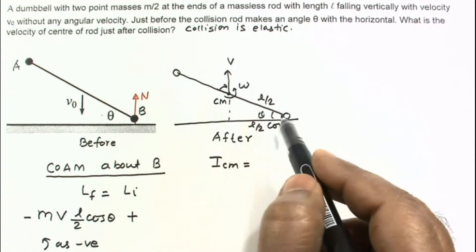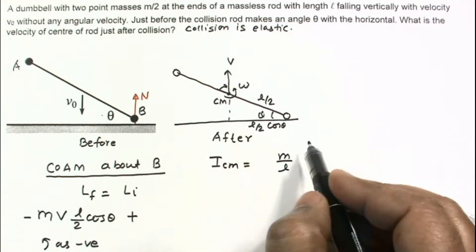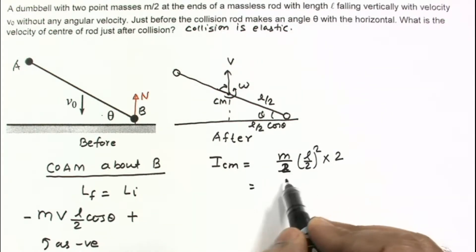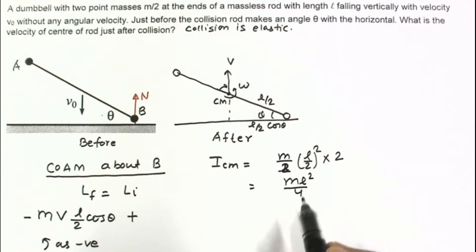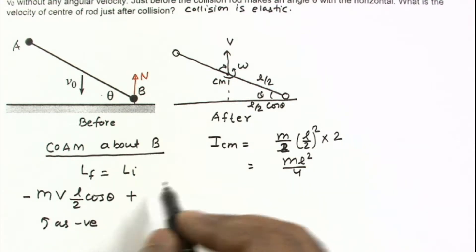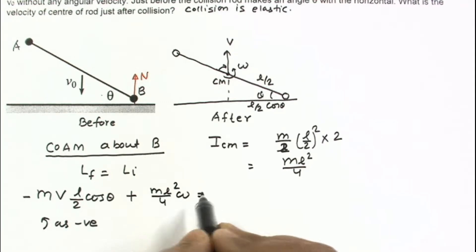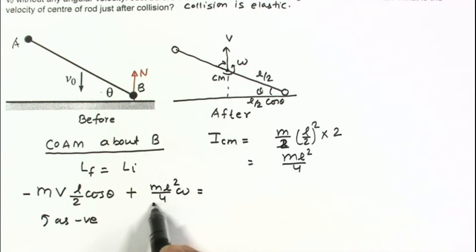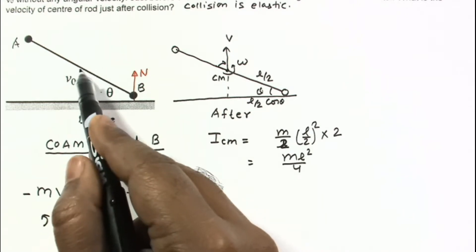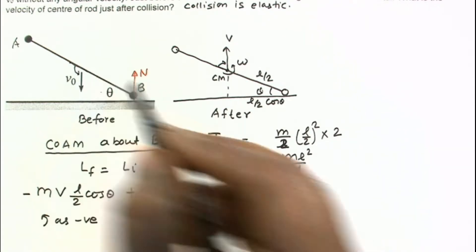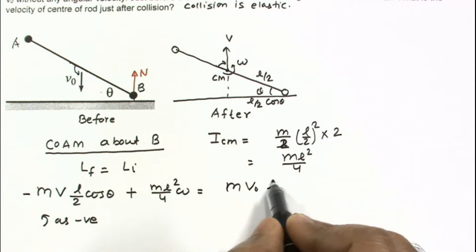I_cm is calculated about the axis through the center of mass: each mass is m/2 at distance l/2, giving I_cm = 2 × (m/2)·(l/2)² = ml²/4. The I_cm·ω term is anticlockwise, so it is positive: (ml²/4)·ω. For L_initial, there is no rotation, only translation. Since the downward velocity v₀ gives an anticlockwise cross product r×v about point B, L_initial = m·v₀·(l/2)·cosθ.